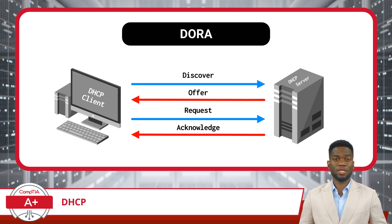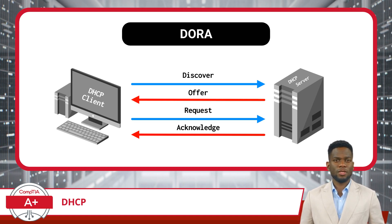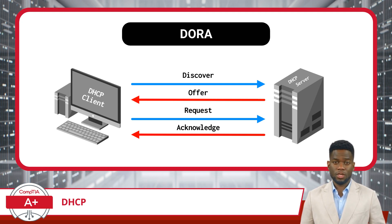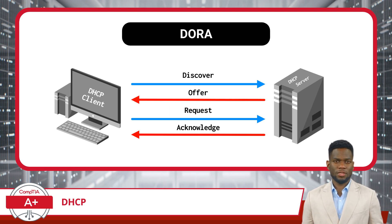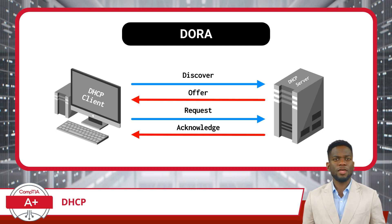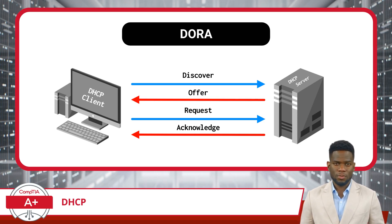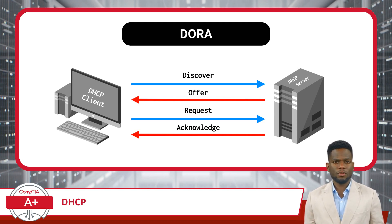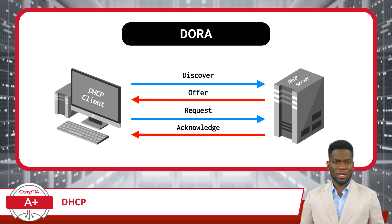The device, upon receiving this offer, moves the process to the Request phase. It evaluates the proposed IP address, and finding it suitable, sends a request message back to the DHCP server. This message is the device's way of saying, 'I accept your offer of this IP address — may I use it?' The final step is Acknowledgement. The DHCP server receives the device's request and seals the deal by sending an acknowledgement message back, confirming the IP address assignment and effectively saying, 'The IP address is yours to use. Welcome to the network.' With this exchange, the device is now a fully functional member of the network, able to communicate with other devices using its newly assigned IP address.